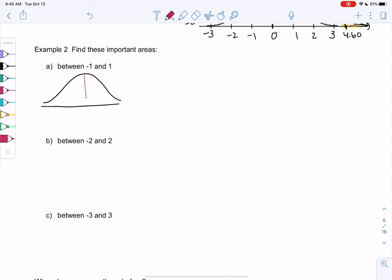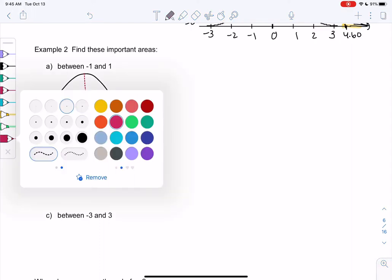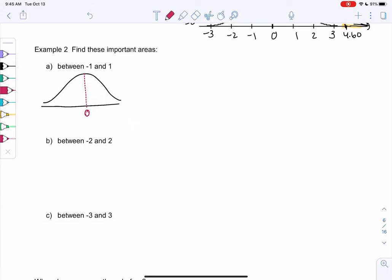So again, 0 is in the middle, and then negative 1 and 1. What's this area? We've seen it before.